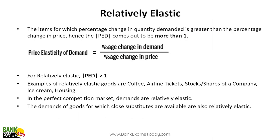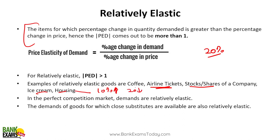Relatively elastic: the items for which percentage change in quantity demanded is greater than percentage change in price. For example, airline tickets — if the price increases by 20%, people will start using trains or their own cars. The effect of price is more pronounced. Other examples include stocks, chairs, ice cream, and housing. If housing prices increase by 10%, demand may decrease by more than 10% — perhaps 20% — because people start waiting for prices to fall. The price elasticity of demand is greater than one for relatively elastic demand.